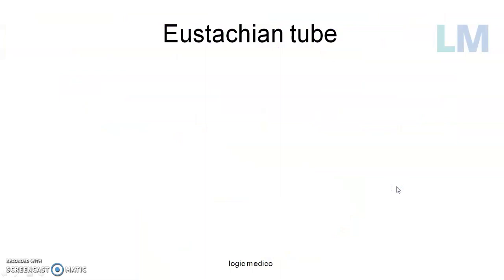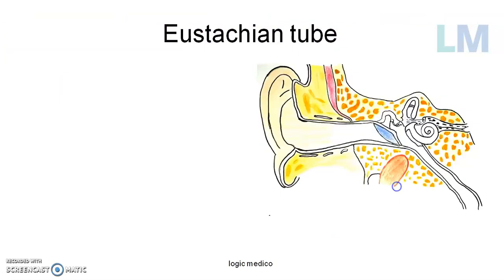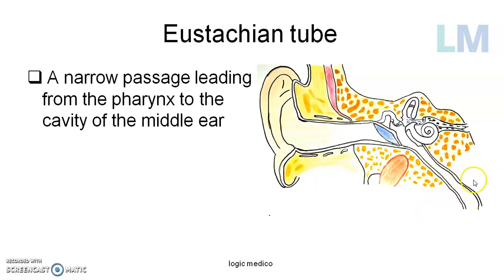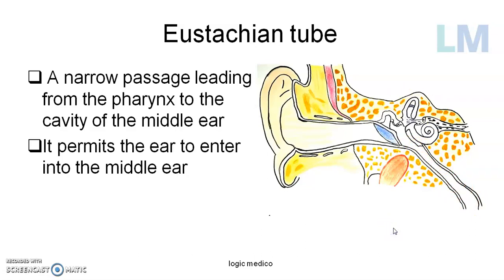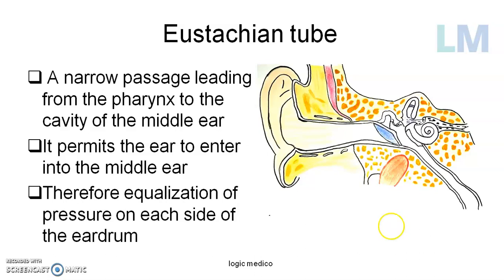Come to the first slide. This is the eustachian tube. You can see that it is running downwards, forwards, and medially, opening into the nasopharynx, connecting the nasopharynx to the middle ear cavity or the tympanic membrane — so it acts as a passage. It is fibroelastic cartilage in the medial part and bony in the lateral part. It permits air to enter into the middle ear cavity, thereby equalizing the pressure on either side of the tympanic membrane or ear drum.